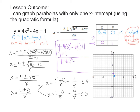Now I'll put a 1 in for x, squared, and a 1 in here as well. We simplify: 1 squared is 1, 4 times 1 is 4, minus 4 times 1 is 4. So 4 minus 4 is 0 plus 1 — that's 1 as well. So (1, 1) is this point right here.